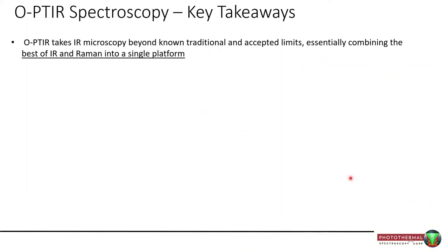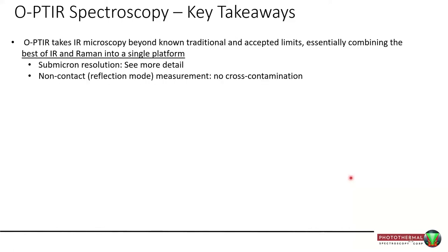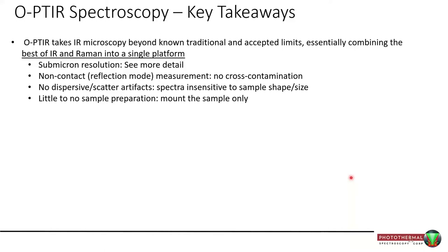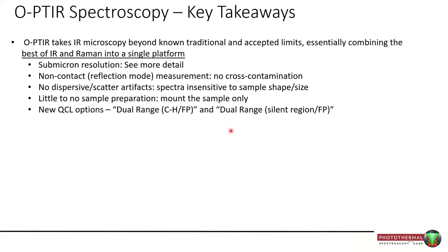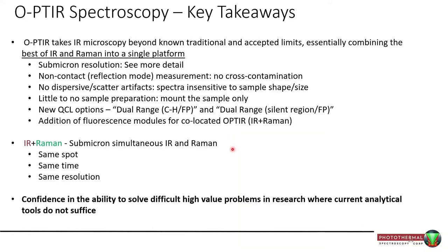Key takeaways: OPTIR brings infrared and Raman into a single platform. Sub-micron resolution gives far more detail and information from your sample. Non-contact reflection mode ensures no cross-contamination. The lack of dispersive scatter artifacts and ease of sample preparation are major benefits. New QCL options have broadened the spectral range to include the important CH range. There is also potential for adding fluorescence modules to enable co-located PTIR with Raman. With that, I'll pass over to Roy for the main part of the talk.